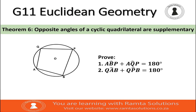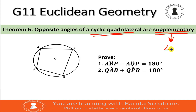There are key words here that we need to highlight. The first being a cyclic quad, and the second being supplementary. Supplementary means two angles are supplementary if they sum up to 180 degrees.